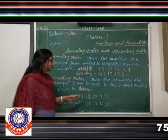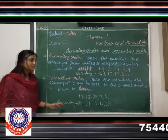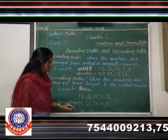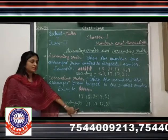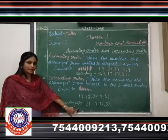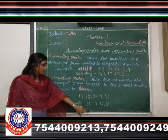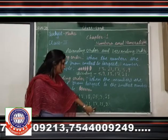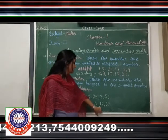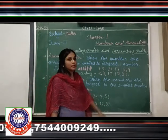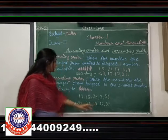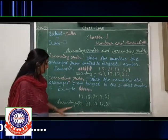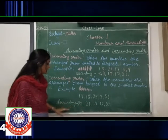Let us arrange them in descending order. First we write 25, after that 21, then 17, then 13, then 9. We arrange in descending order, writing the largest number first and aiming for the smallest number.